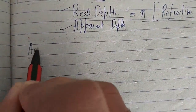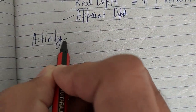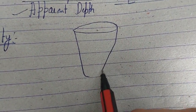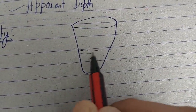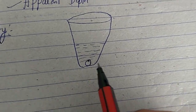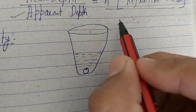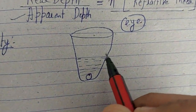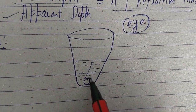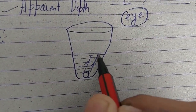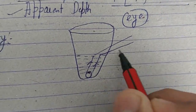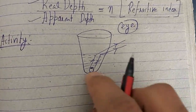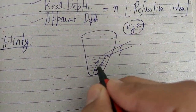There is one more activity. A coin is placed at the bottom of a glass that is half filled with water. But if someone is looking from one end of the glass with their eye, the coin is not visible. The rays from the coin are going in a direction that does not reach the eye. This activity asks: what is the way to make this coin visible to the eye that is looking into the glass from one end?